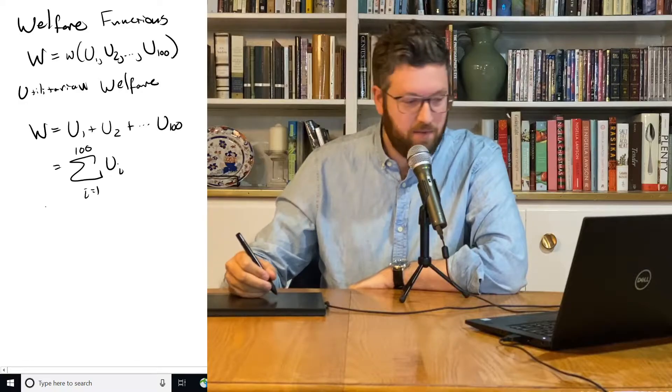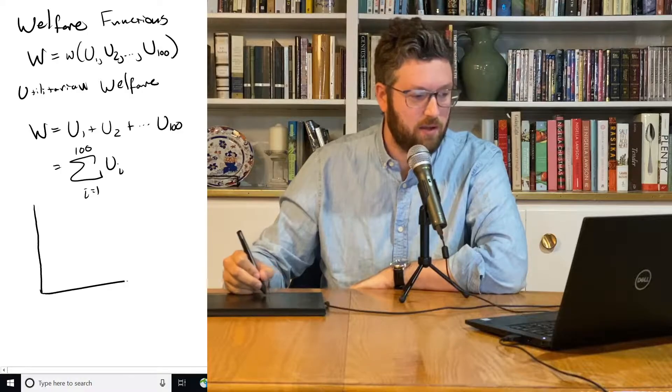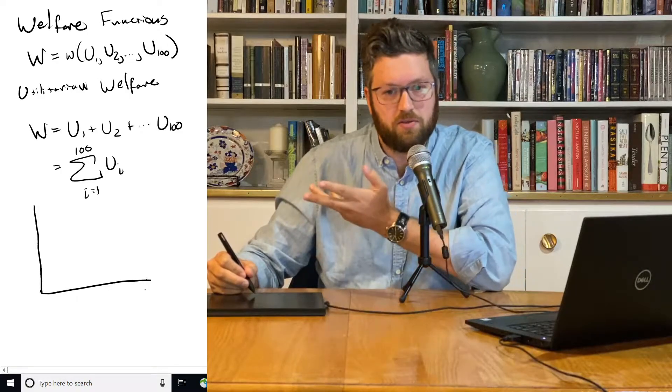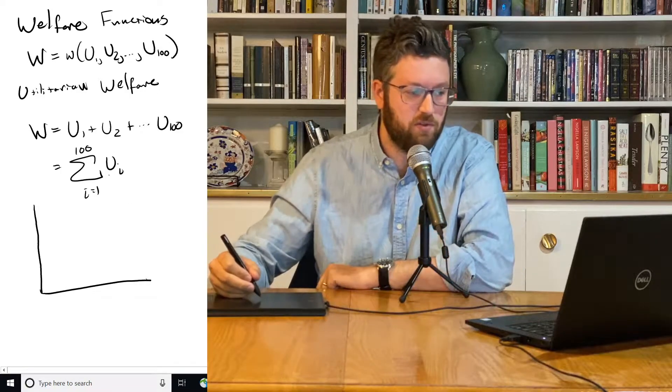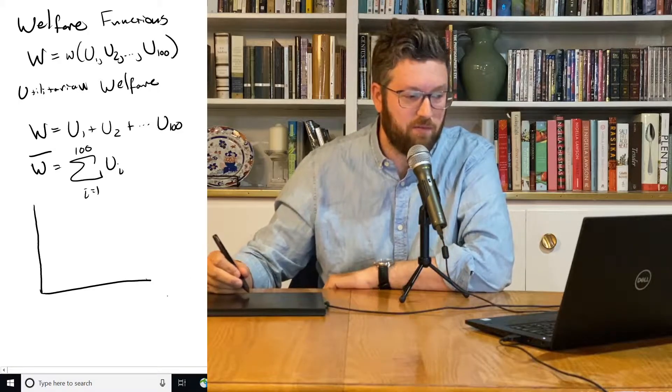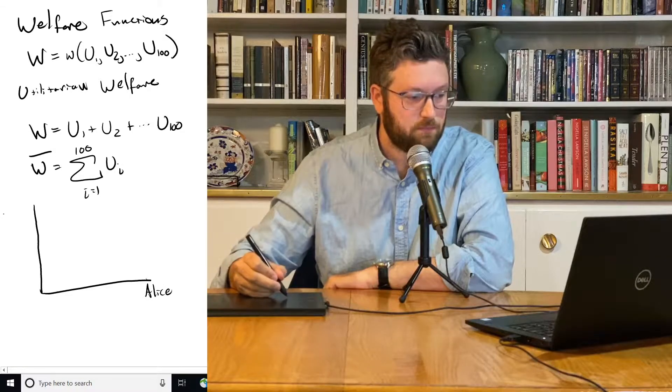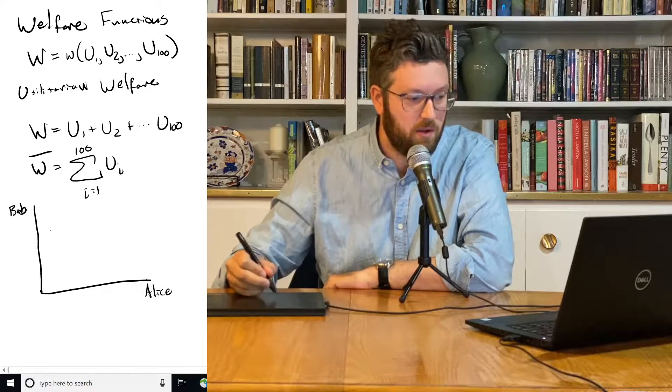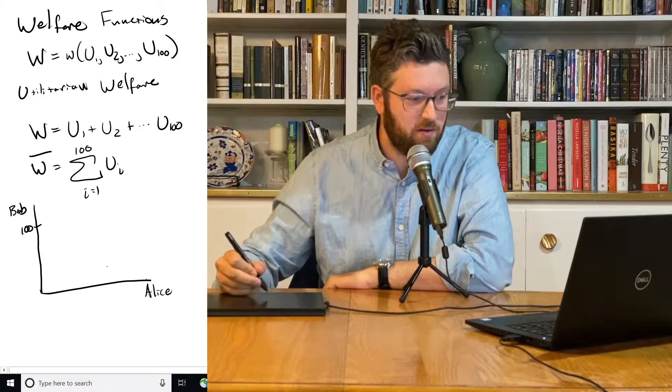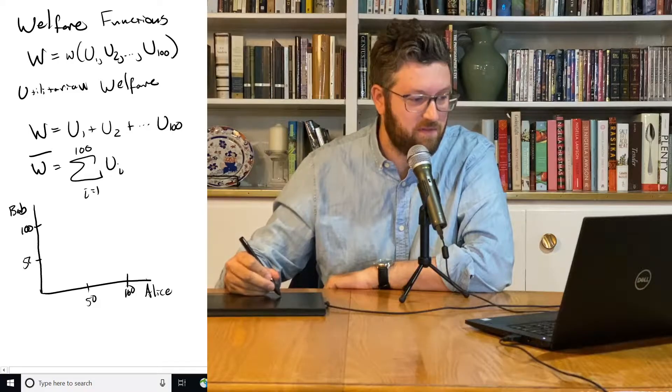Now, if we do this, we can sort of map out indifference curves where this function is equal to some set level of welfare. So let's go back to Alice and Bob, and we've got 100 here, we've got 100 here, and we've got 50 and 50.